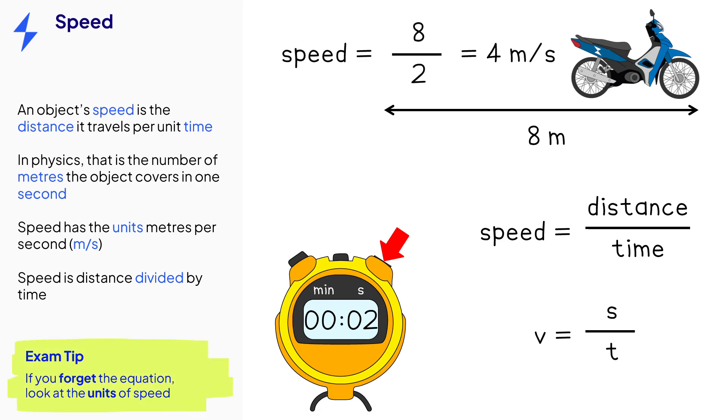If you forget the equation for speed, look at the unit of speed. Meters per second literally tells us distance per time, which is another way of saying distance divided by time.